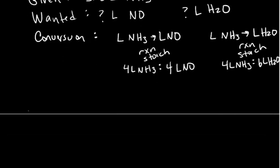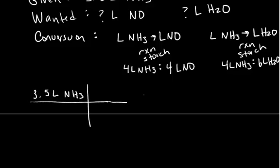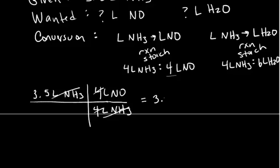Starting with 3.5 liters of ammonia, we multiply by the unit factor with ammonia on the bottom so it cancels: four liters of ammonia for every four liters of nitric oxide formed. The liters of ammonia cancel and the fours cancel, leaving us with 3.5 liters of nitric oxide formed.